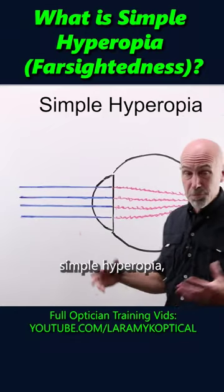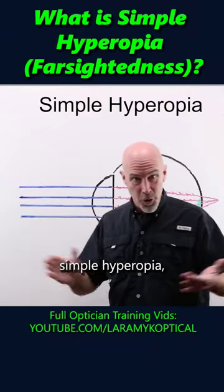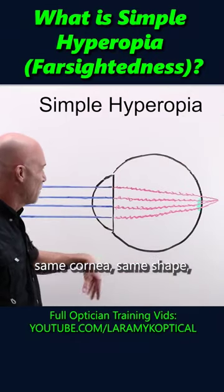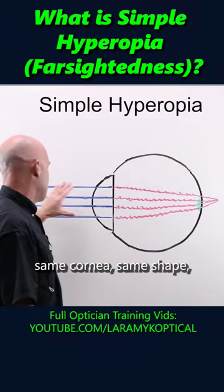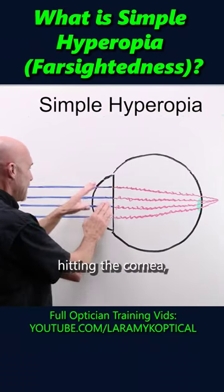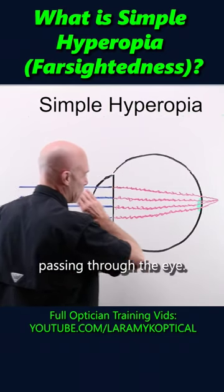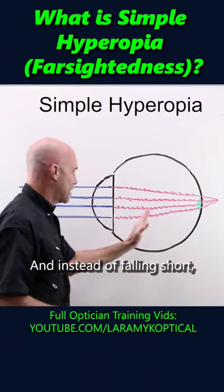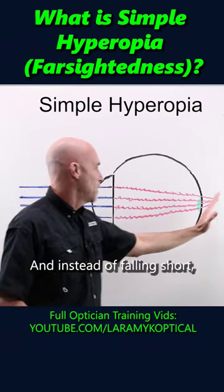Next would be simple hyperopia. Same eyeball, same cornea, same shape, same rays of light coming in, hitting the cornea, passing through the eye, and instead of falling short,